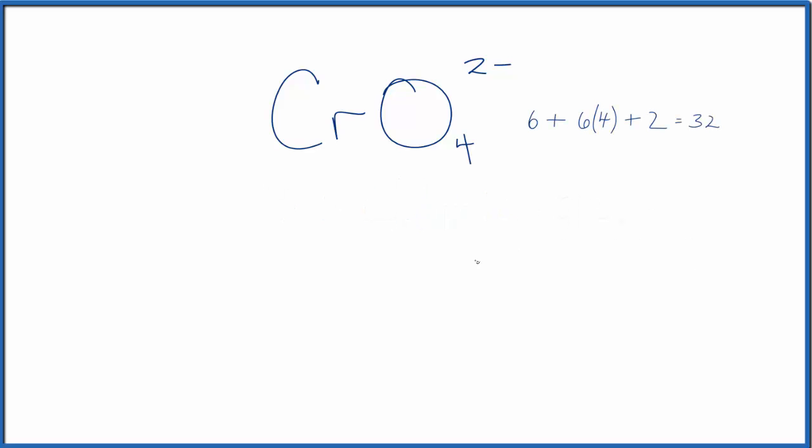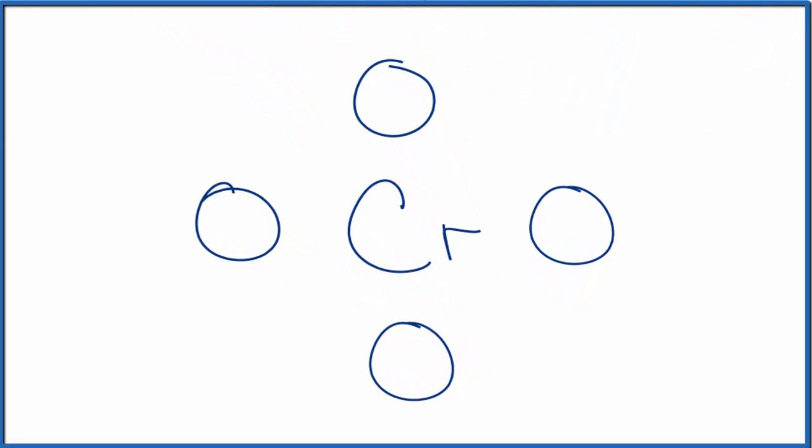So we'll put the least electronegative element in the center. That's the chromium. And then we'll put the oxygens around it. So we have a total of 32 valence electrons for the CrO4²⁻ Lewis structure. Let's place a pair of electrons between each chromium and oxygen. That's going to form our bond between the chromium and the oxygen atoms. We'll use eight. Then we'll go around and complete the octets on the oxygens until we've used 32 valence electrons.